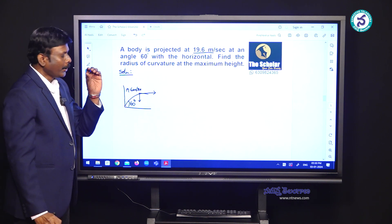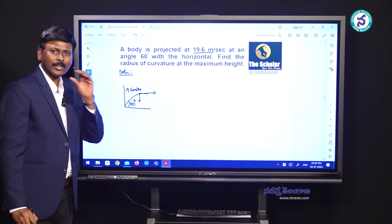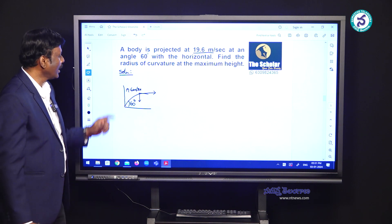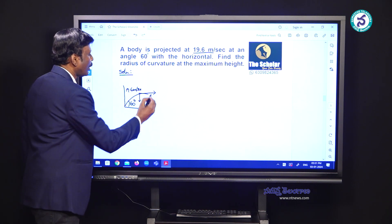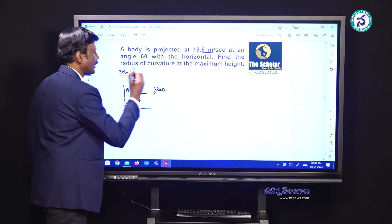At the maximum height, you will have only the horizontal component of the velocity, hence the horizontal component of the velocity becomes V cos theta here.